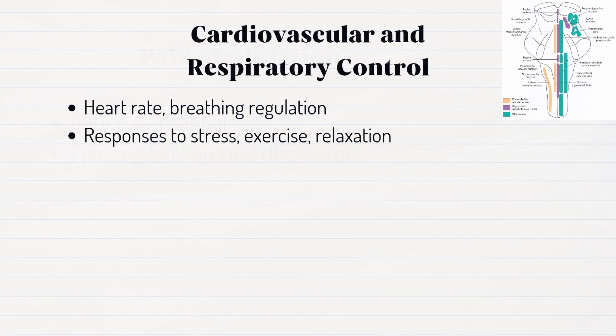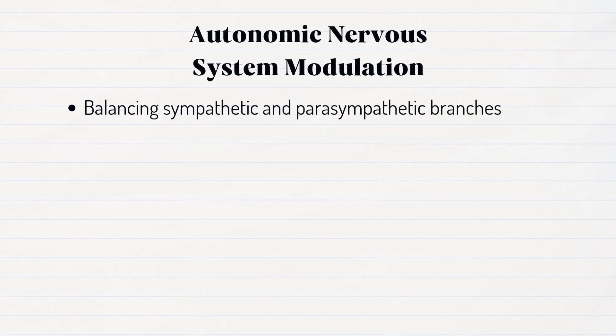Our heart rate and breathing patterns are under the influence of the reticular formation. It works with other brain areas to regulate our responses to stress, exercise, and relaxation. Balancing the autonomic nervous system, the reticular formation helps maintain harmony between the sympathetic and parasympathetic branches, impacting our overall physiological equilibrium.